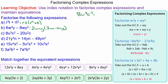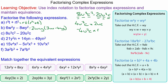For the next question we have 8u cubed c squared minus 20u squared c. The highest common factor of 8 and 20 is 4, of u cubed and u squared is u squared, and of c squared and c is c. So 4u squared c is the highest common factor. Multiply it by 2uc to make 8u cubed c squared, and 4u squared c times 5 makes 20 — we already have the u squared and c terms, so we just multiply by 5. So 4u squared c lots of 2uc minus 5.